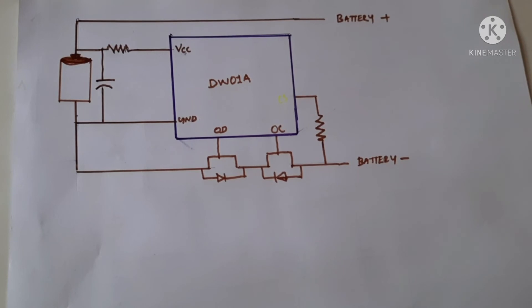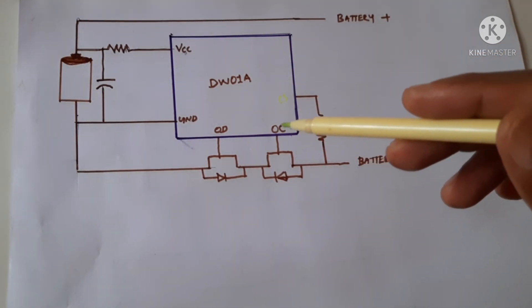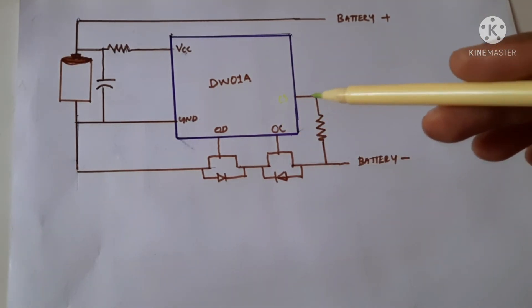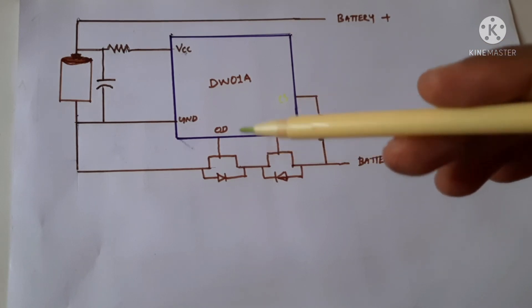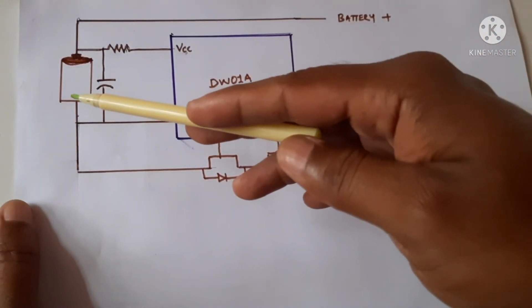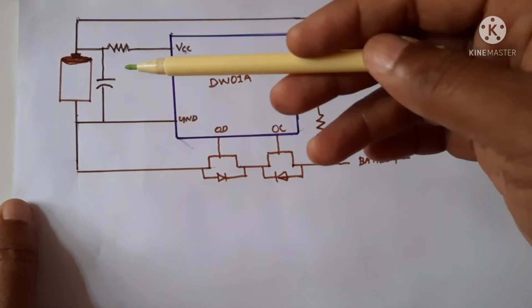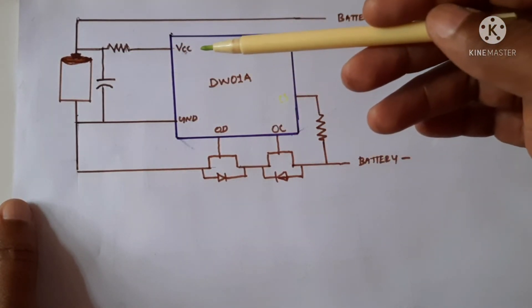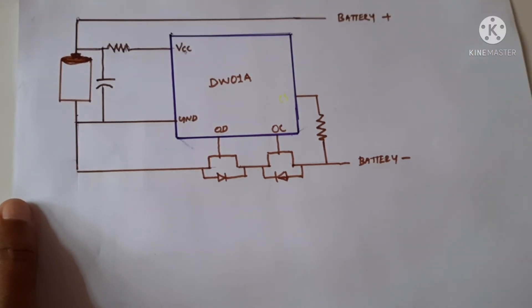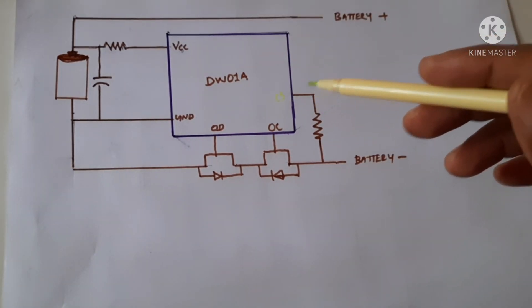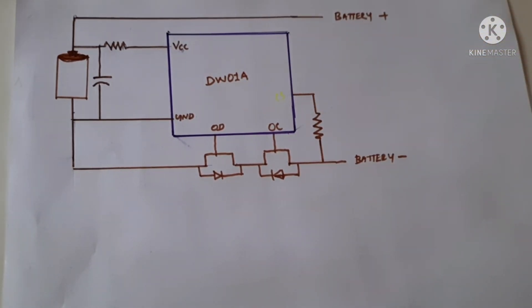In combination with TP4056, we can use this. TP4056 is used for constant current constant voltage charging. And this is used to protect from over voltage, over discharge, and short circuit protection. This is the use of this DW01 IC.